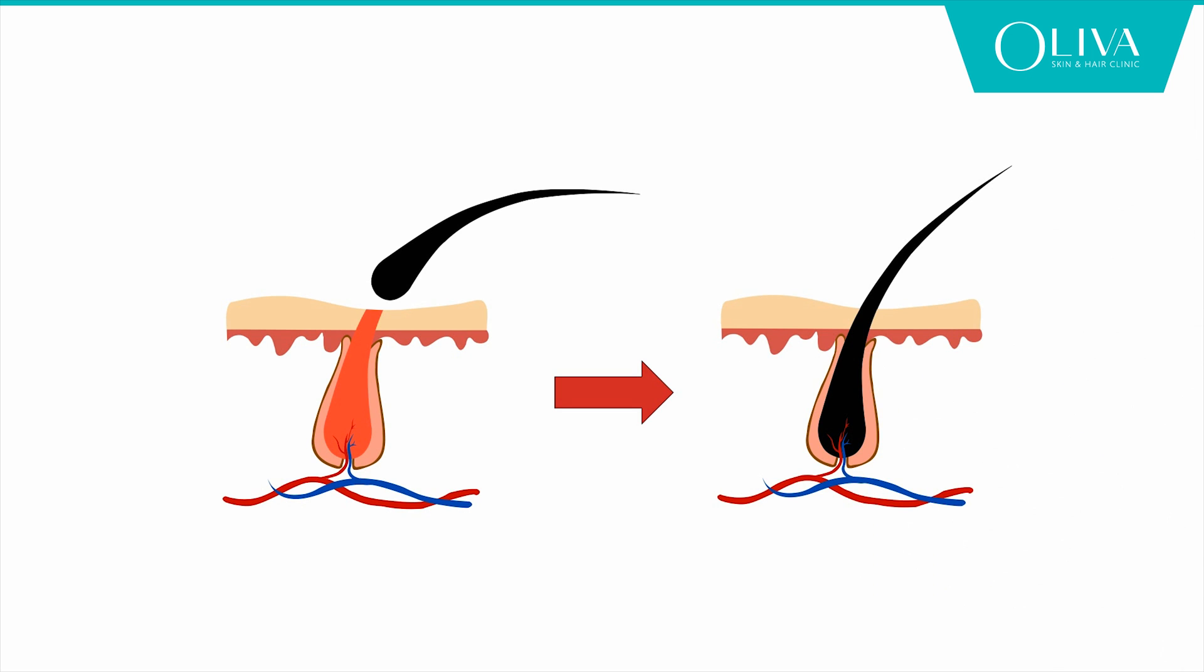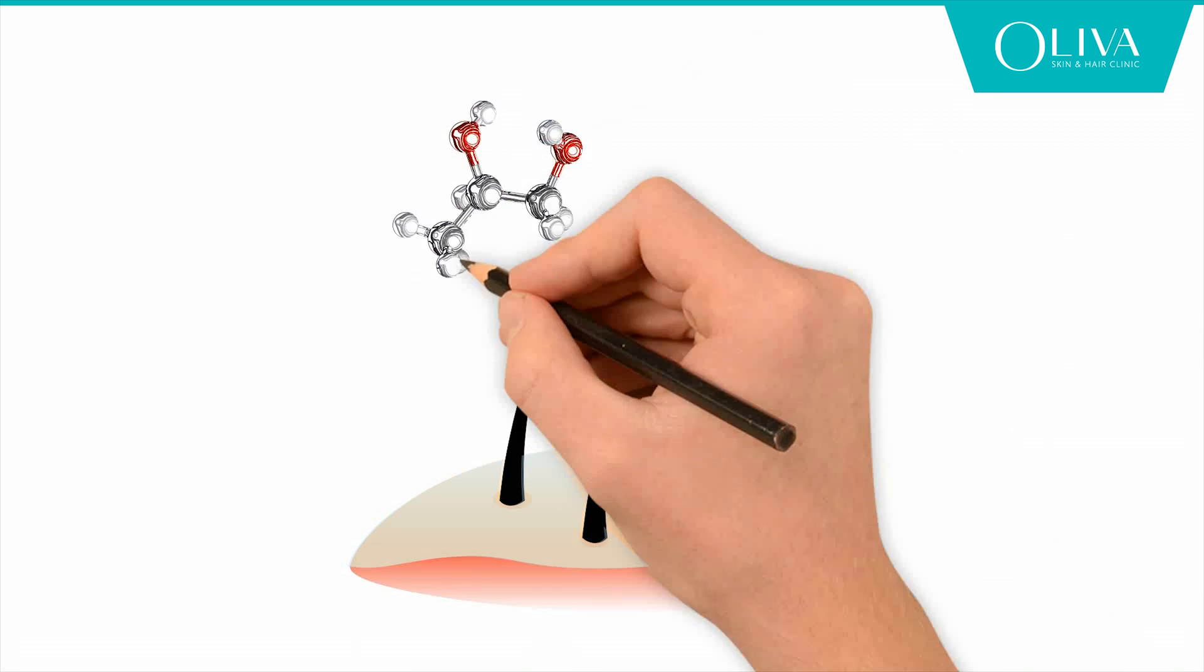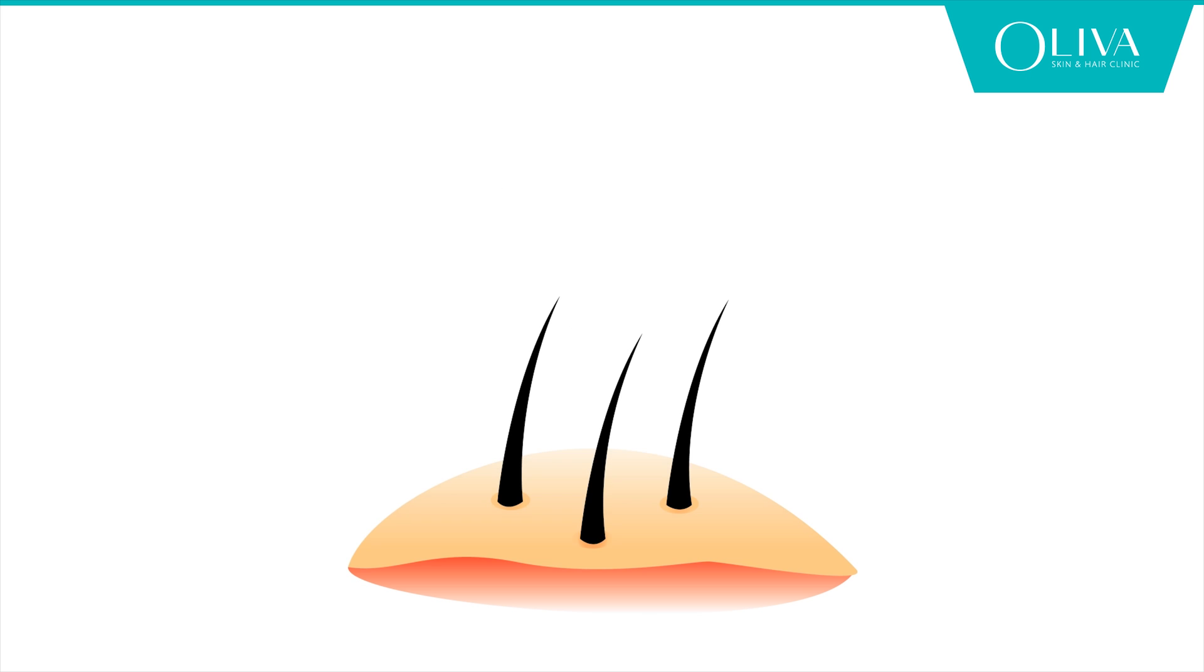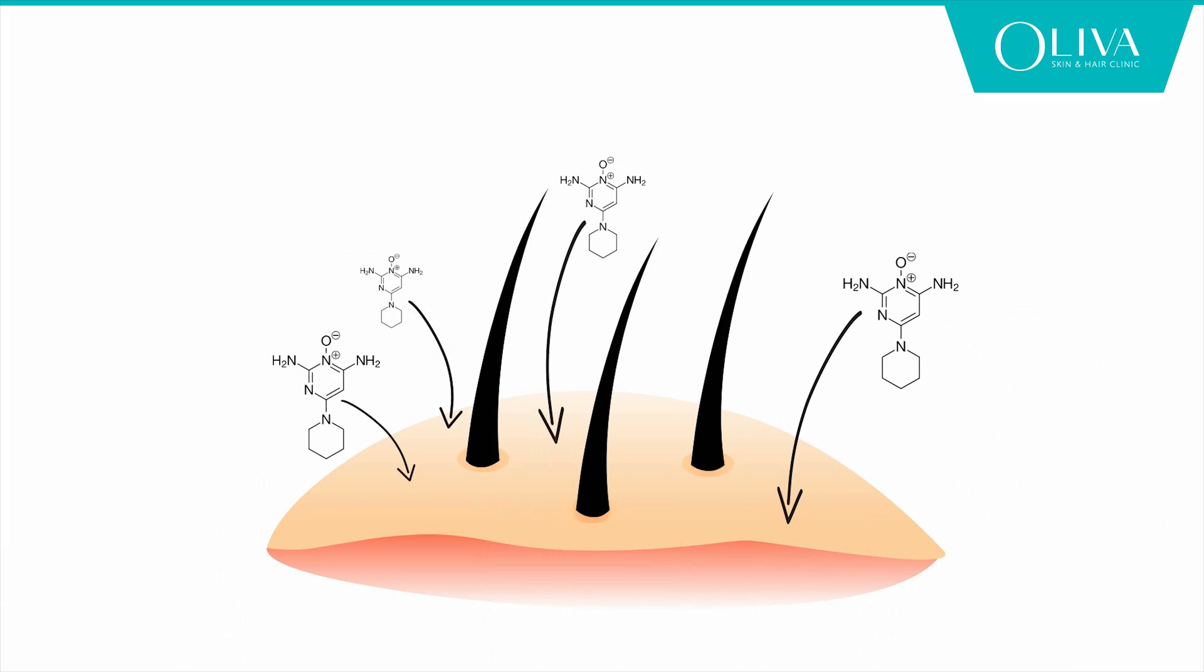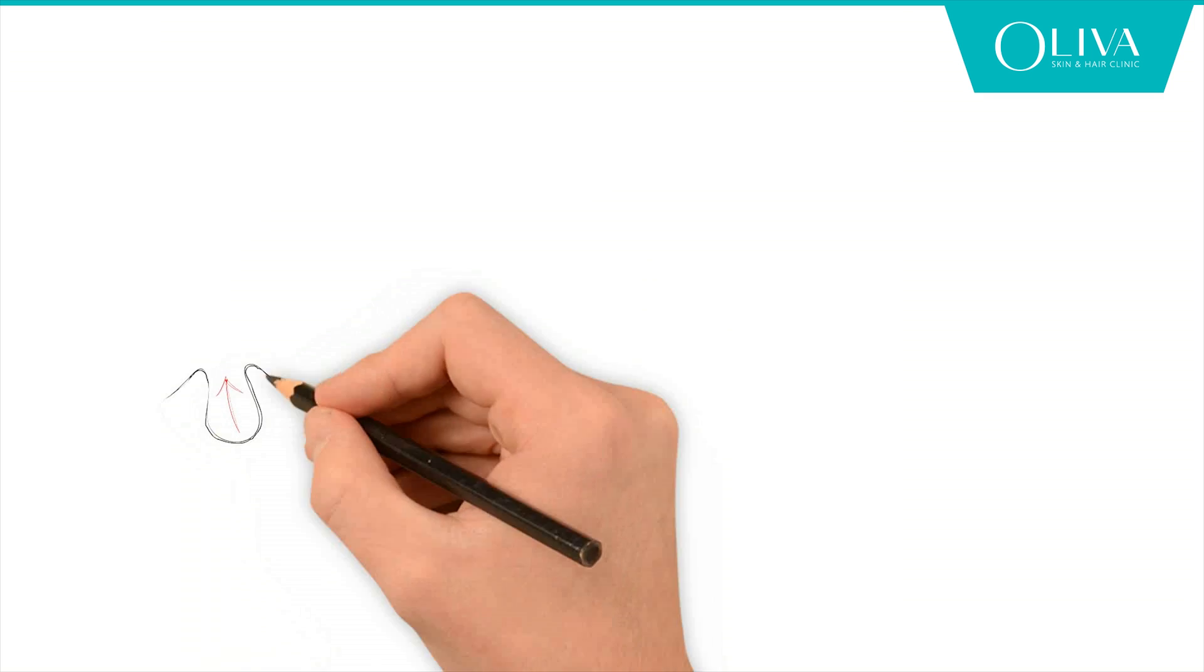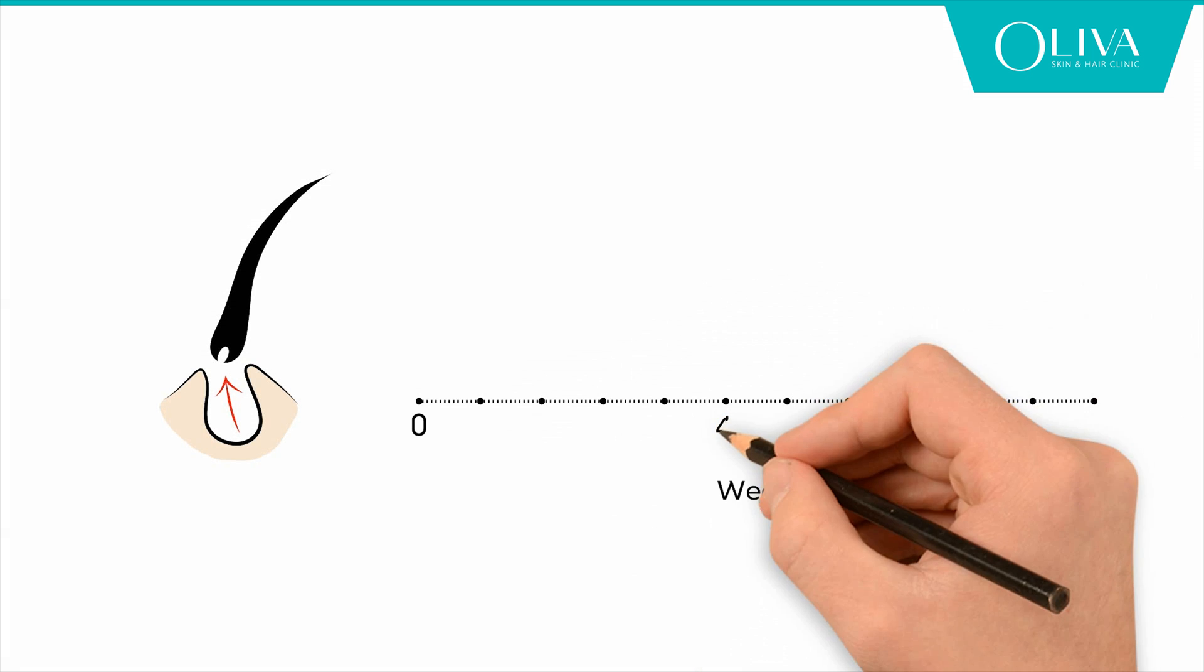by thicker hair in anagen phase. Propylene glycol in the lotion decreases the greasy feel on scalp and causes enhanced absorption of minoxidil onto the scalp. It is important to note that this shedding may last for four to eight